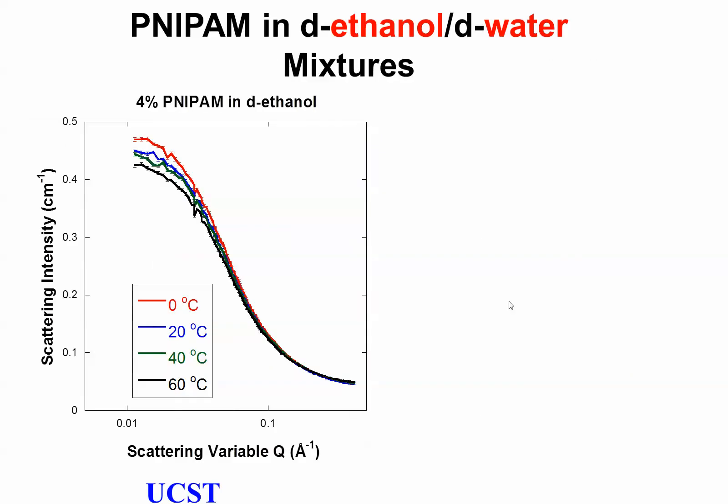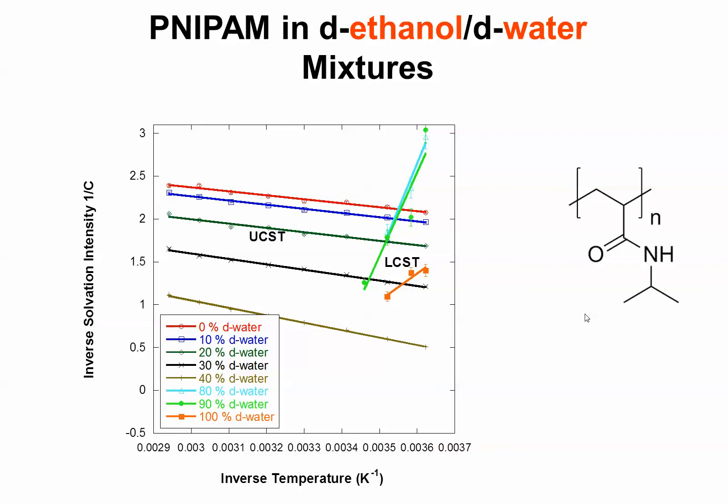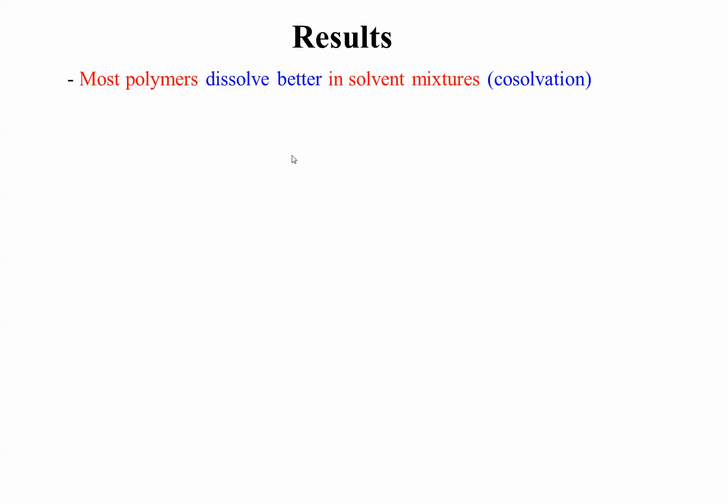In this case, NIPAM. In pure ethanol, you heat up and the intensity goes down. In pure water, you heat up and the intensity goes up. Well, if you plot the inverse scattering intensity, inverse intensity versus temperature, you get really the UCST and LCST regions very precisely, which allows us to build up the phase diagram.